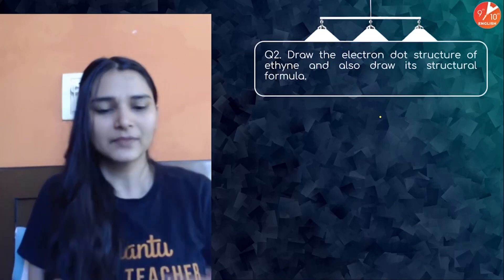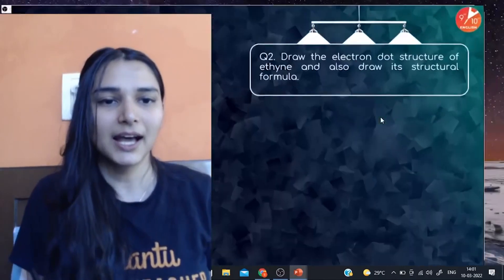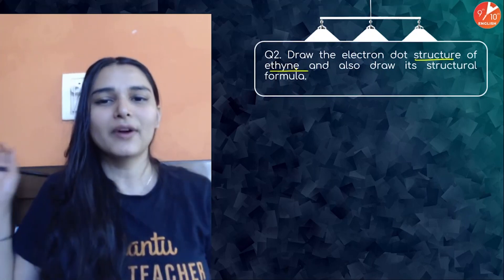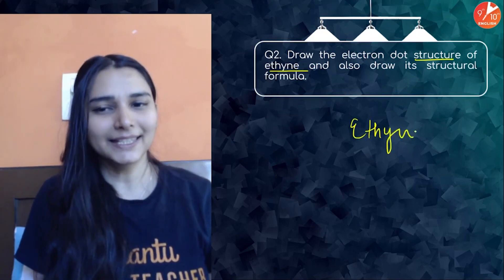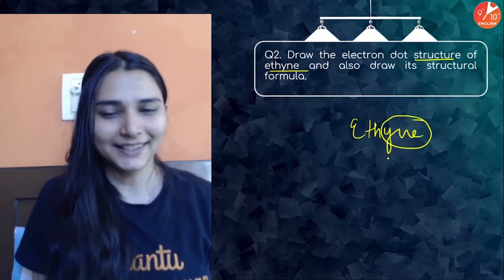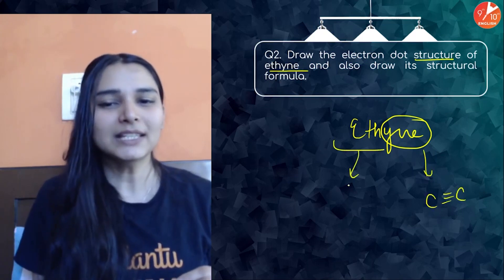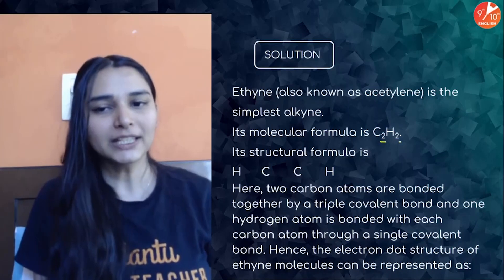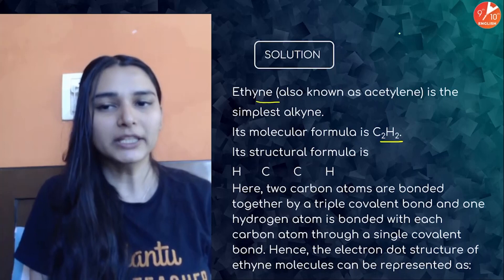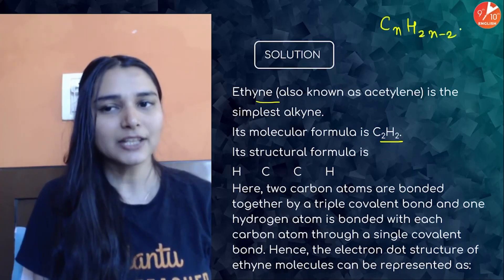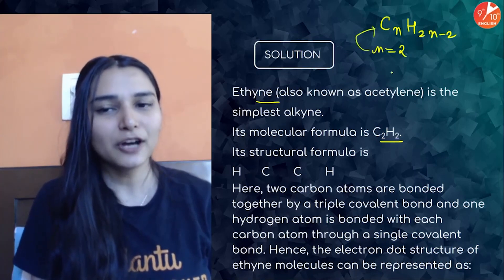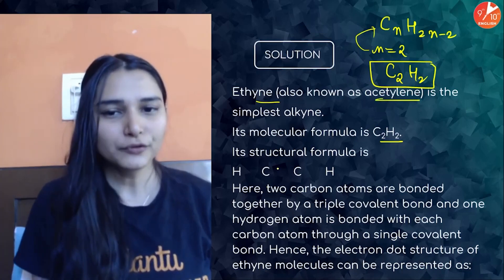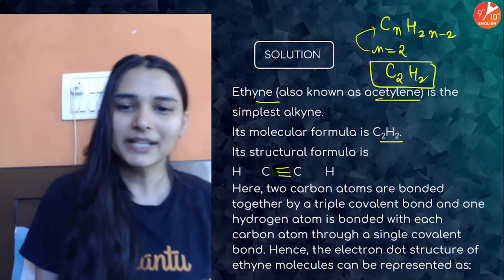The next question: draw the electron dot structure of ethyne and also draw its structural formula. Break down the name — 'eth' means two carbon atoms, and the suffix '-yne' indicates an alkyne, meaning a carbon triple bond. The molecular formula of ethyne is C2H2. Alkynes have the general formula CₙH₂ₙ₋₂; putting n=2 gives C2H2, commonly known as acetylene. Since it's an alkyne, connect the two carbon atoms by a triple bond.